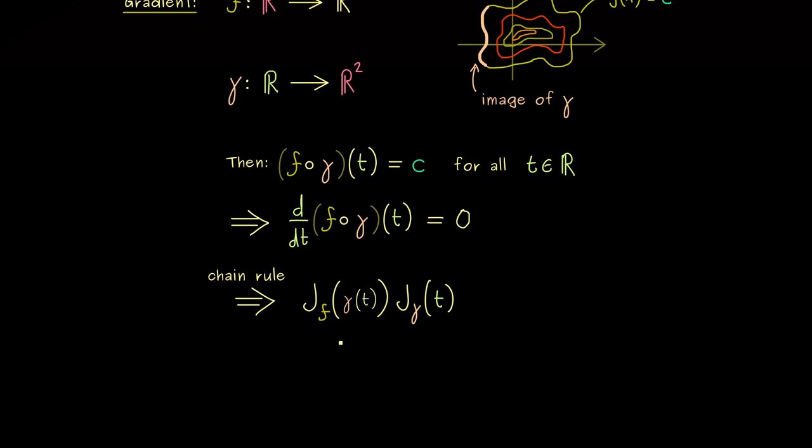However now we have learned in the last video that this Jacobian matrix here for f can be written as a gradient. So I remind you the gradient is just the transpose of the Jacobian matrix. So we have the gradient of f at the position gamma of t.